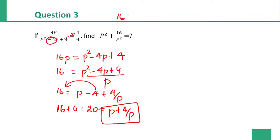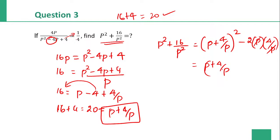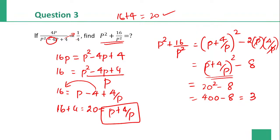Now find p squared plus 16 by p squared. Using the formula: a squared plus b squared equals a plus b whole squared minus 2ab. Here a is p, b is 4 by p, so 2ab equals 2 into p into 4 by p, p cancels, leaving 8. The expression becomes p plus 4 by p whole squared minus 8. Substituting, that is 20 squared minus 8, which equals 400 minus 8, giving 392. So 392 is the right answer.